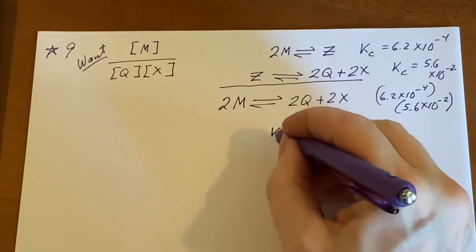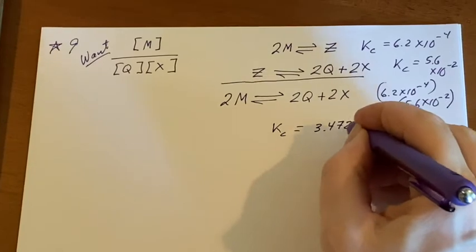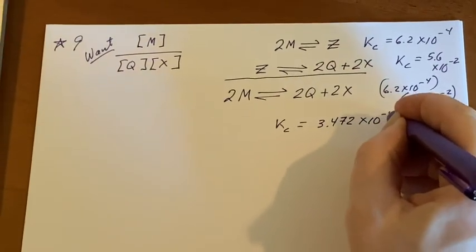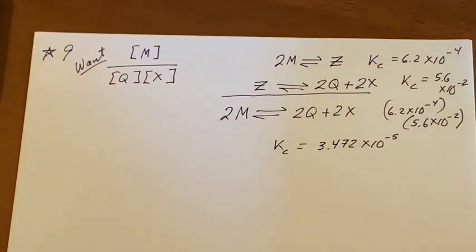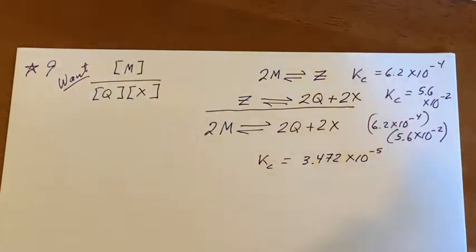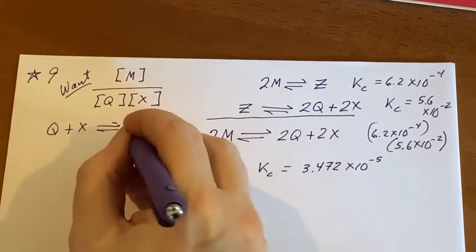So the Kc for this would end up being 3 point, and I'm going to have too many sig figs, but I'll carry them along for a while and I'll get rid of them at the end. Now what's wrong with this? Well, two things are wrong with it. First of all, it's backwards. I wanted Q plus X to be an equilibrium with M.